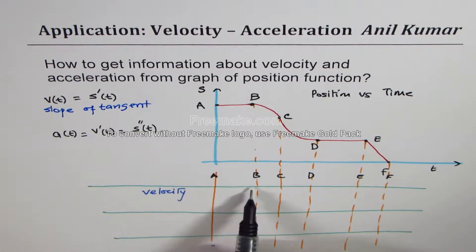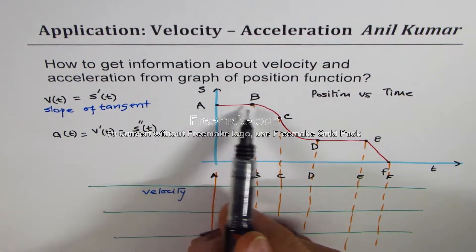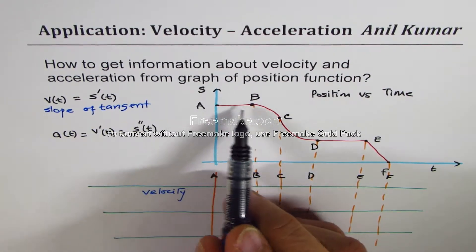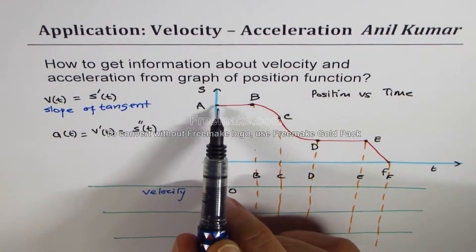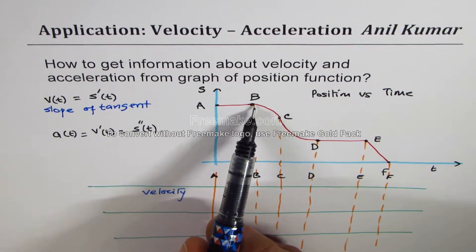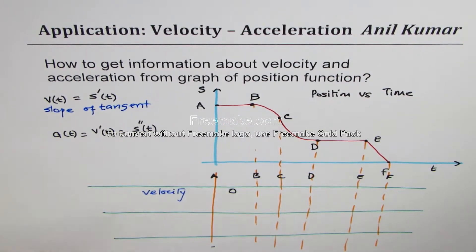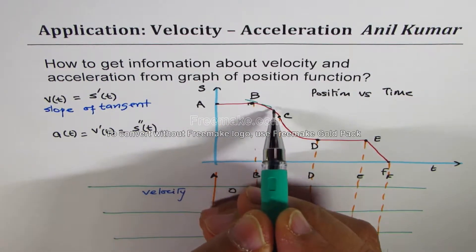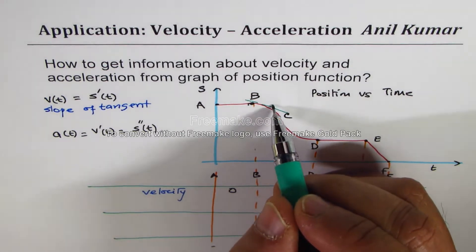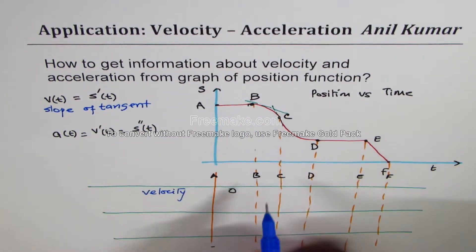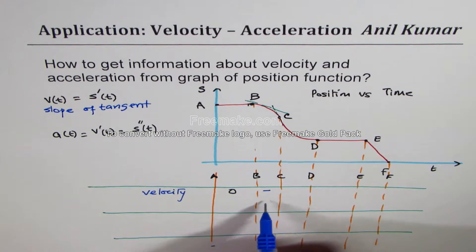From a to b, since there is no change in position, the velocity is zero — if you draw a tangent, we have a horizontal tangent line. Now what happens between b to c? From b to c, the tangent is negative and at c it is very steep. So from b to c, the velocity is negative.